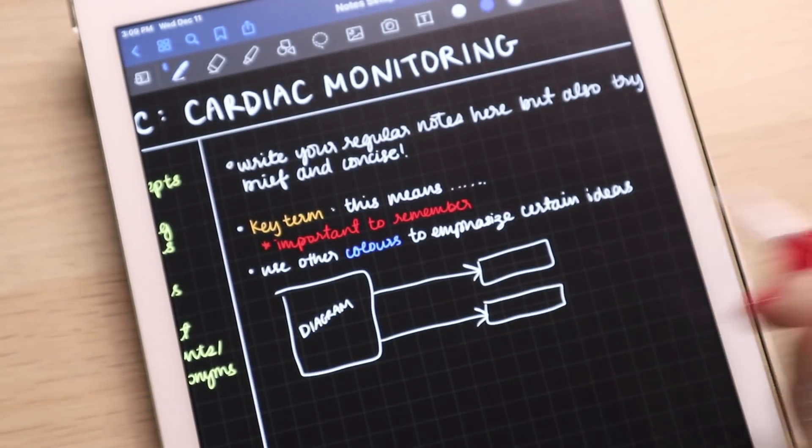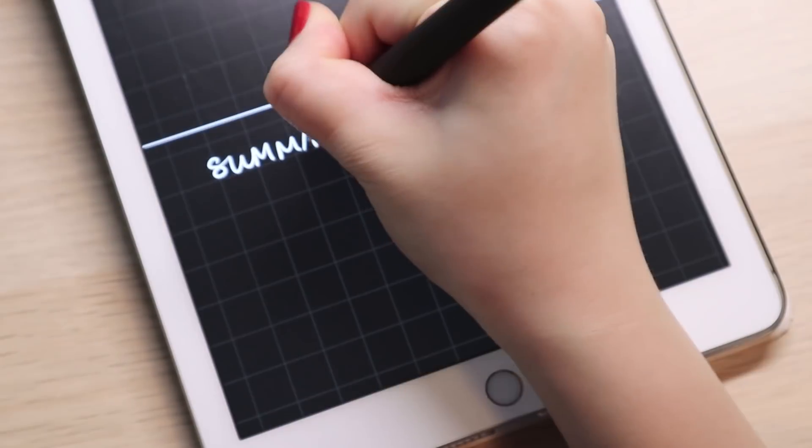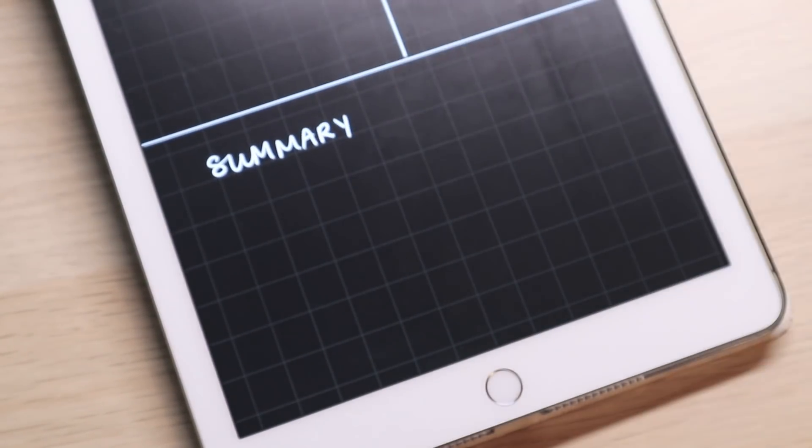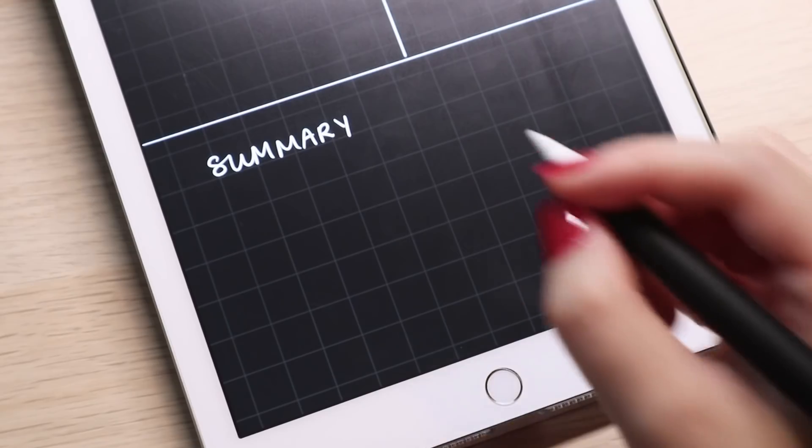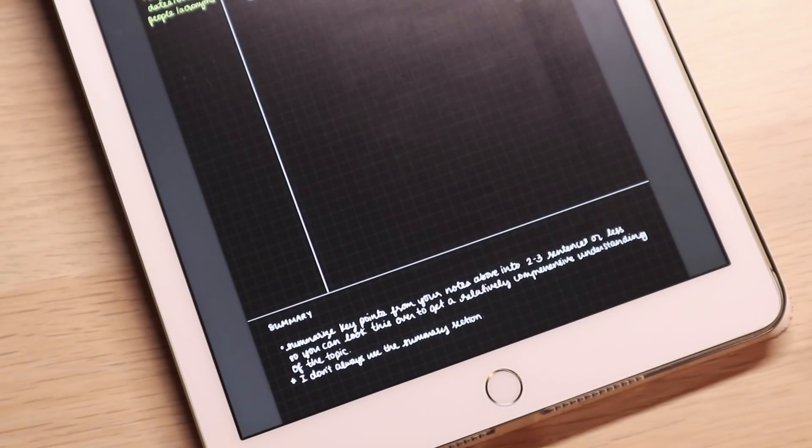Now, my way of doing it is a bit modified in that I don't focus so much on writing the summary section. The summary part is probably one of the main points of the Cornell method, but I think that the summary part works better if you have less content to study.